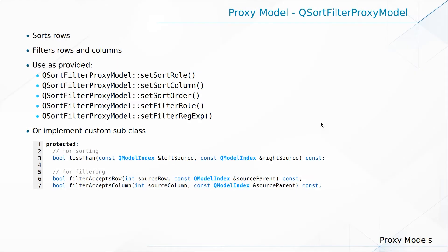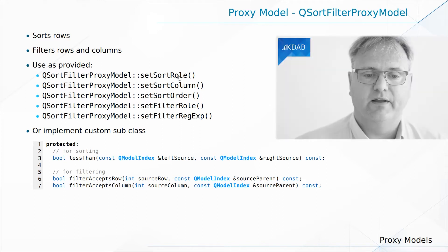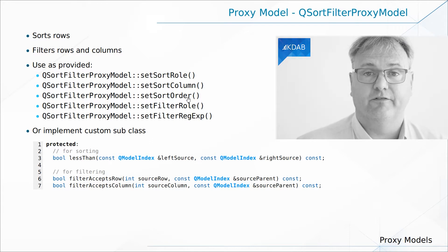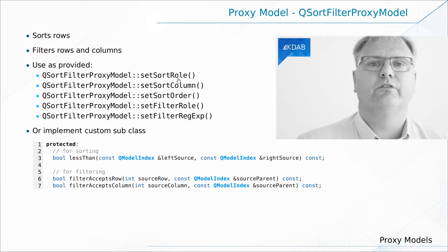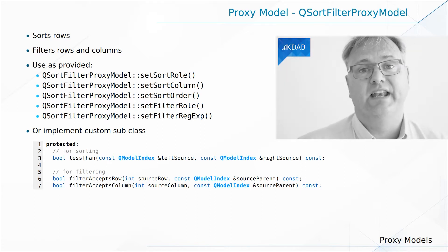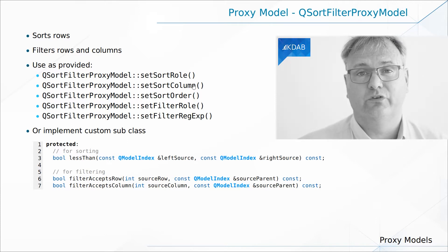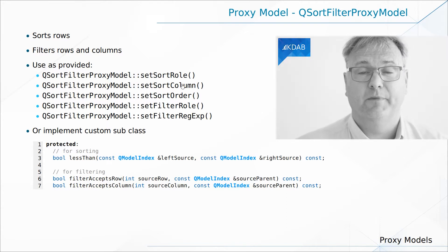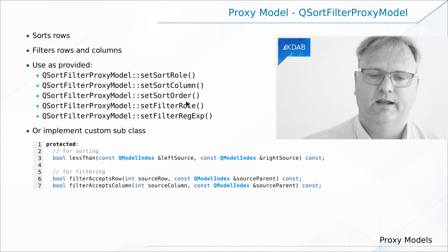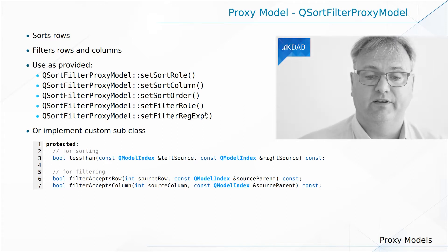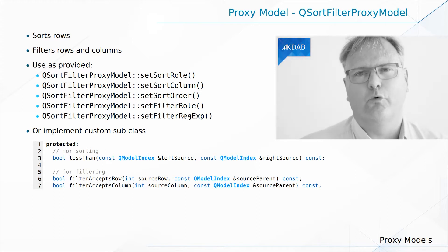If you just want to take it out of the box and use it, you're going to use one of these three methods for sorting and one of these two methods for filtering. For sorting, you need to specify the role you want to sort on — do I want to sort by the length of the videos, or by the name? If you have multiple columns, such as in a table or a tree, you can specify which column to sort on, and of course the sort order — ascending or descending.